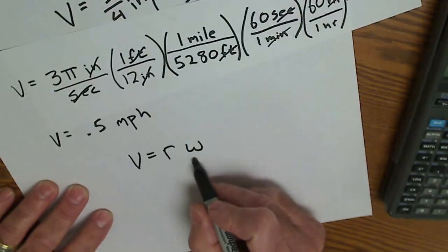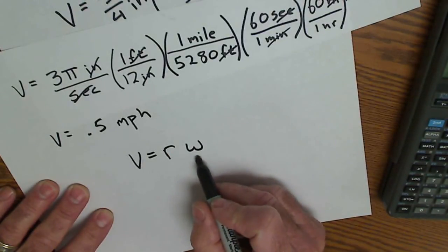Again, the equation linear velocity equals radius times angular velocity. However, this only works if it's in radian measure.